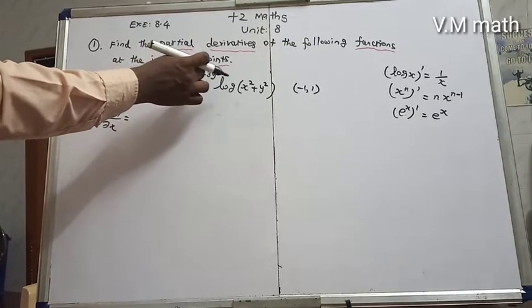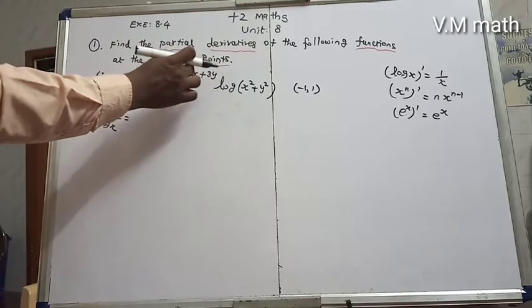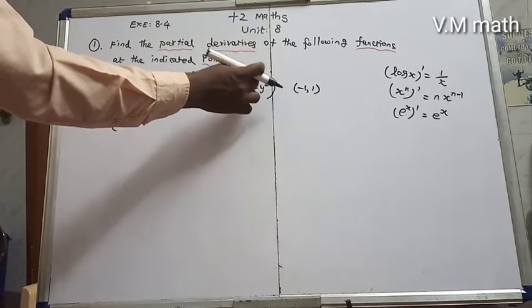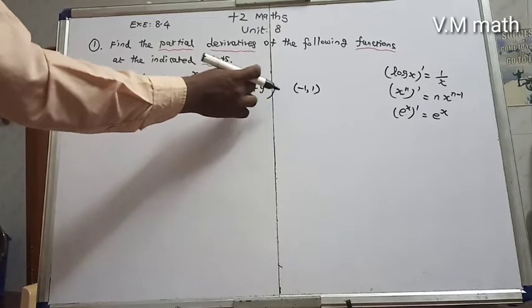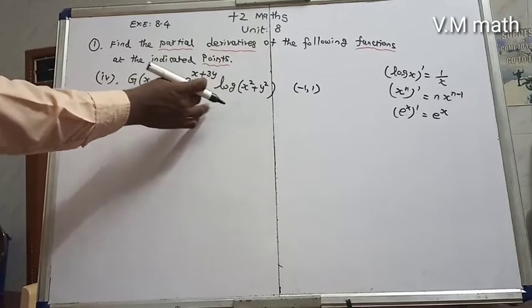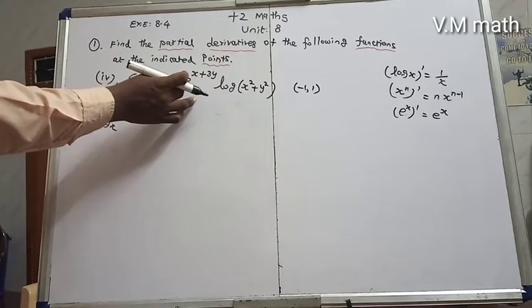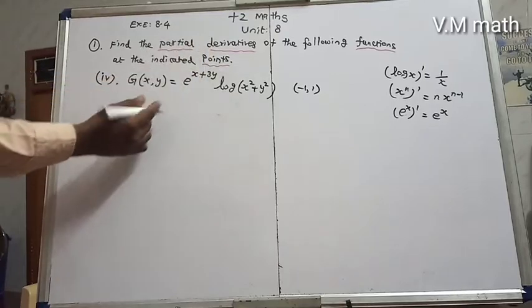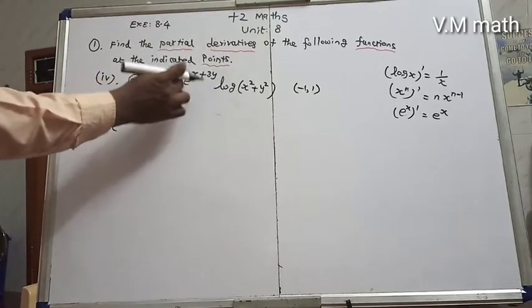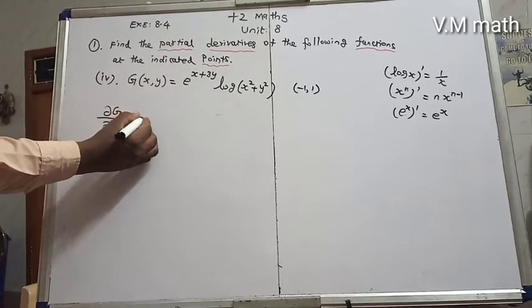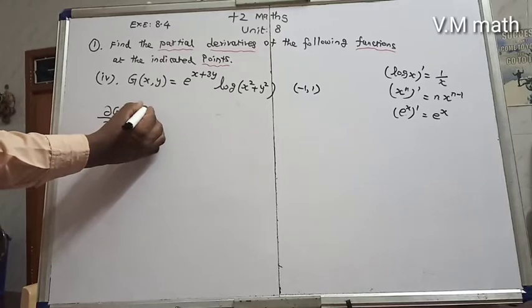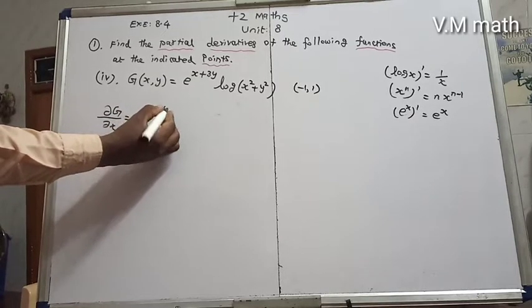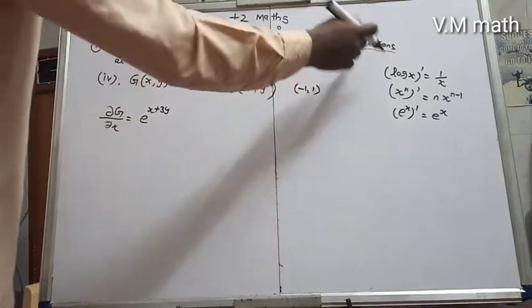So we differentiate e^(x+3y) times log(x² + y²). Since this is a product of two functions u and v, we apply the product rule: differentiate u times v, so first differentiate the first term.